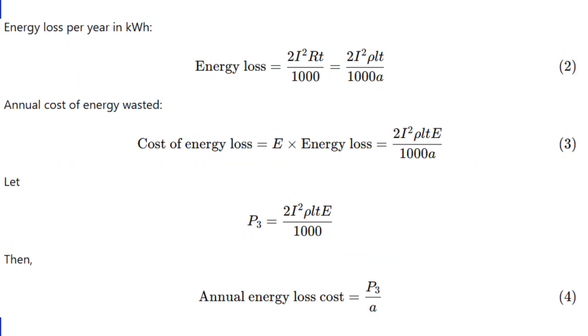Now let's move to the second part, the annual cost of energy wasted. This comes from power loss due to resistance, or what we commonly call I squared R loss. Since resistance is inversely proportional to the area, the energy loss is also inversely proportional to A. This cost is represented by P3 divided by A.